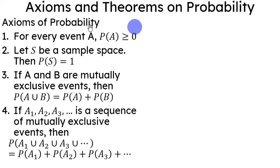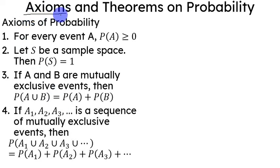Let us now look into some axioms and theorems on probability. When we say an axiom, it is a statement that we just consider as true and we don't need proof for it. And here are some of the axioms of probability.